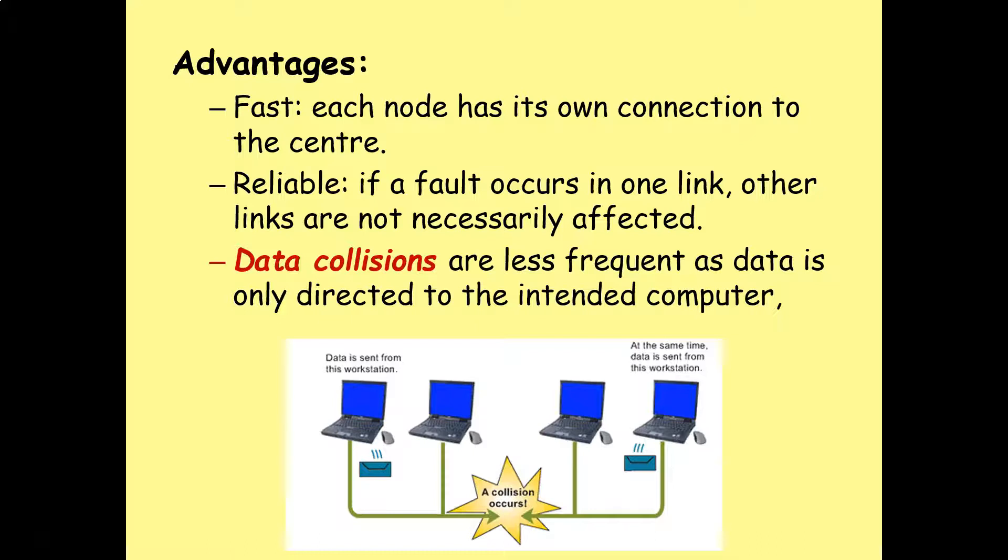So you look at this diagram here, you've got a little explanation of what a data collision is. So one workstation is sending data, another workstation is sending data at the same time - those packets of data collide and data is lost. That's not going to really happen very frequently on a star network topology because each computer has its own connection to that central switch.